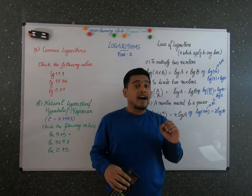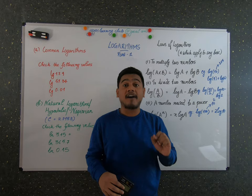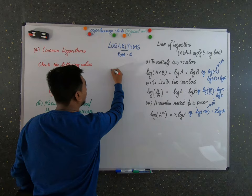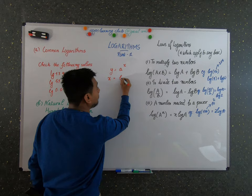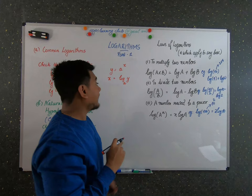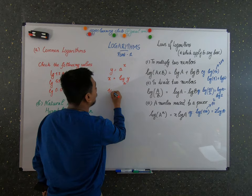If a number y can be written in the form a raised to x, then x is called the logarithm of y to the base of a. So a is the base, and x is equal to the logarithm of y.